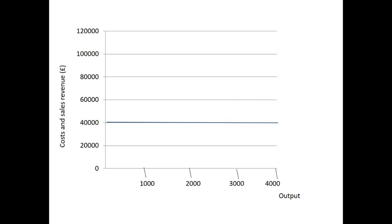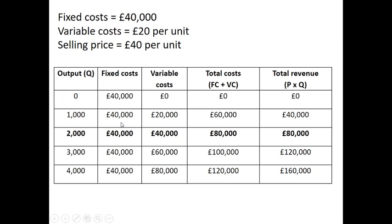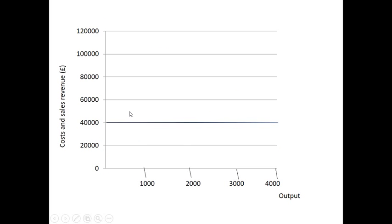Okay, so the first line we want to plot is our fixed costs. Our fixed costs remain constant regardless of the level of output. Now, we said our fixed costs were £40,000. It might just be worth screenshotting these numbers and taking a picture so you can compare the chart to this as we're going along. But the fixed cost, you can see it's £40,000, and it doesn't matter what our level of output is. The fixed costs remain constant at £40,000.